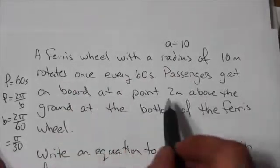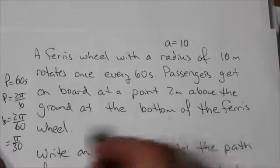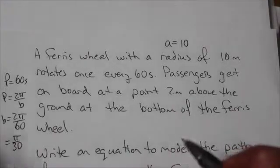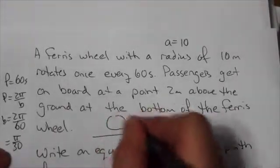Passengers get on board at a point 2 meters above the ground. So what that's telling me - and sorry, this is at the bottom of the Ferris wheel - what that's telling me is what the d value is. So here's the ground. Here's the Ferris wheel.